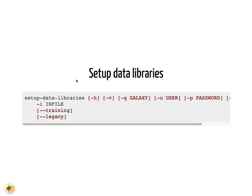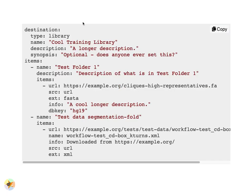Ephemeris also has a command to set up data libraries to upload shared data to Galaxy. The input is a YAML file describing folders with files, where each file's contents can be downloaded from a public URL.